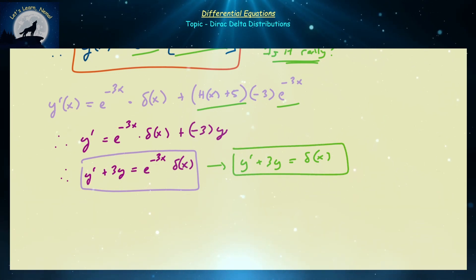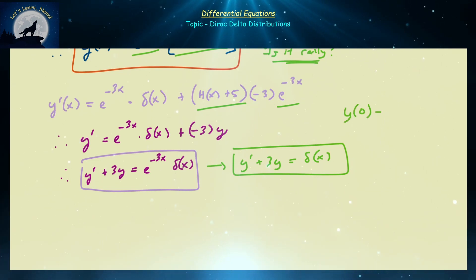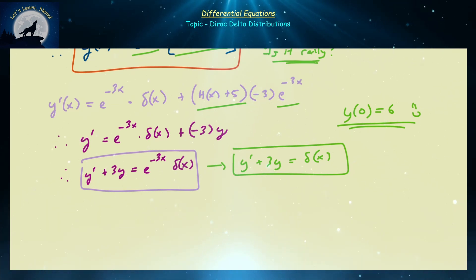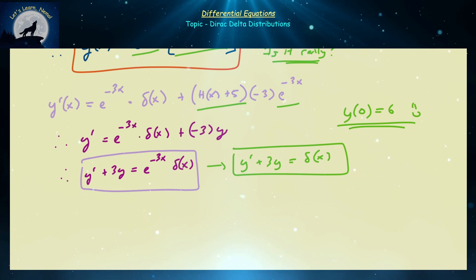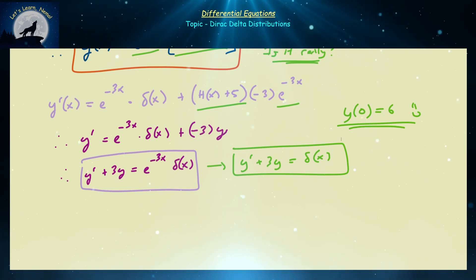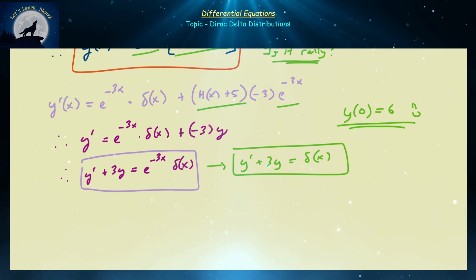Using integrating factors together with the relationship between Heaviside and Dirac delta gives us the precise solution for this impulse differential equation. I'll leave it to you to verify that y(0) = 6 is also satisfied.